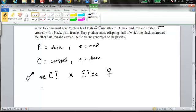So, let's write this down. From that cross, we've got half of the kids with at least this. So that would be black and crested. And the other half are going to look like this, red and crested. That's an E, not a C. We don't know the second allele there.